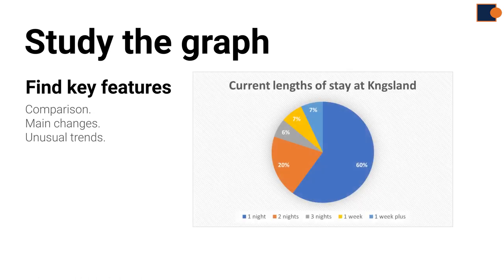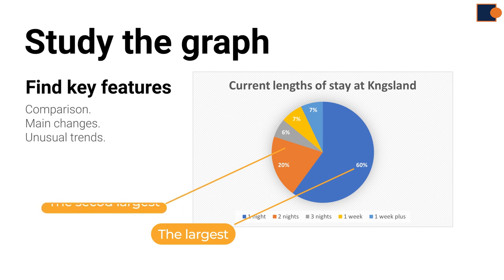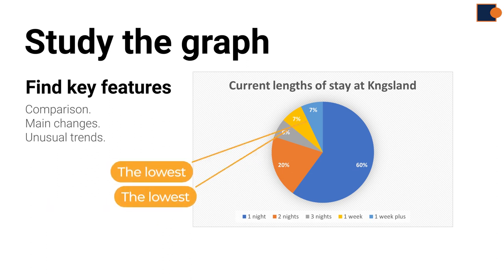Let's look at the current start period. It appears that a huge part of the change is one night, which is 60%. The second biggest is two nights, but longer periods like three nights, a week, or week-plus are the lowest.